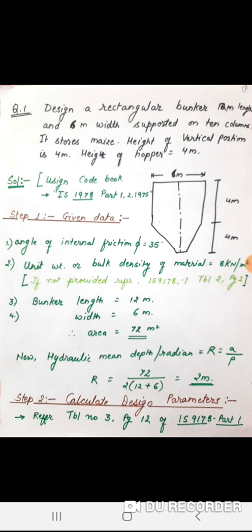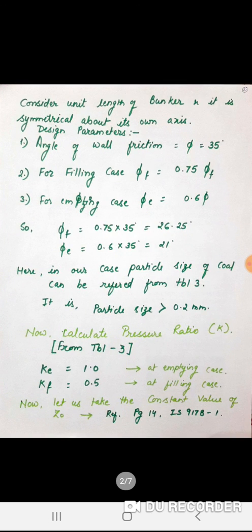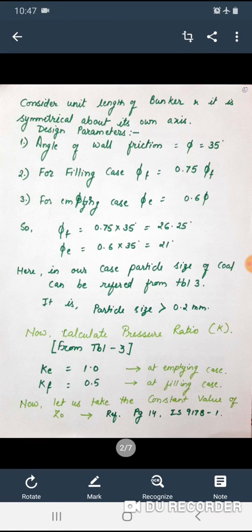The second step is to calculate design parameters. We will refer to Table 3, page 12 of IS-9178 Part 1. First, we consider unit length of the bunker; it should be symmetrical about its vertical axis. The design parameter is the angle of wall friction. We have phi as 35 degrees, and there are two cases: the filling case and the emptying case.